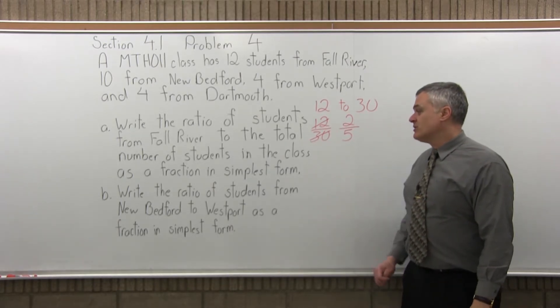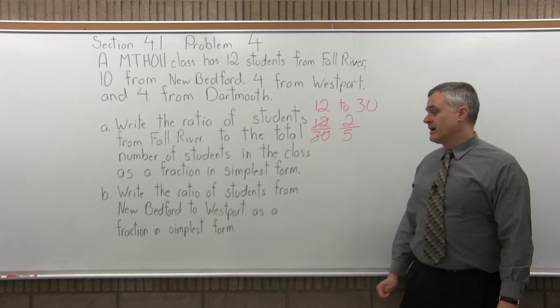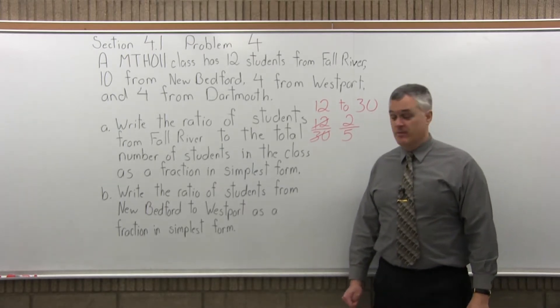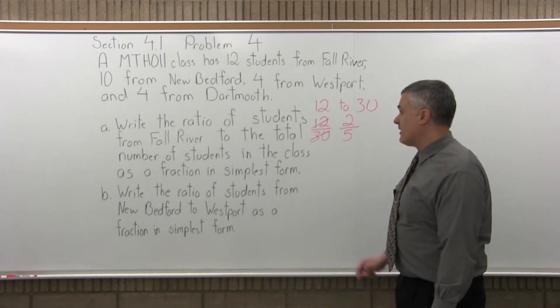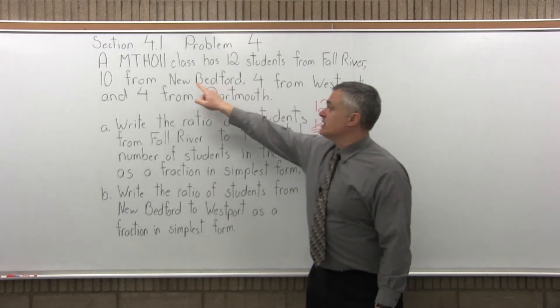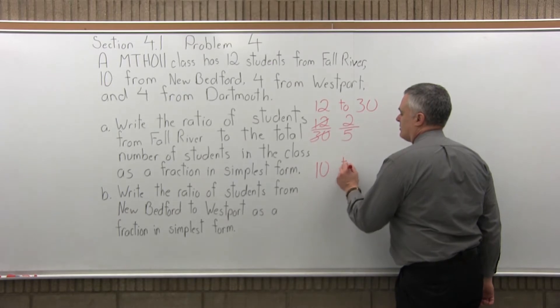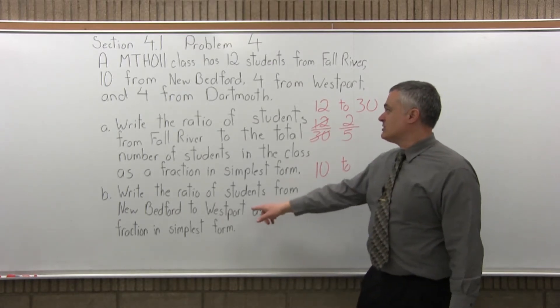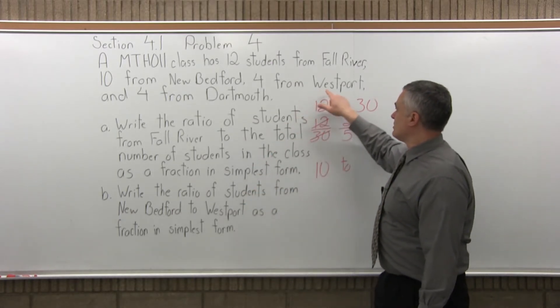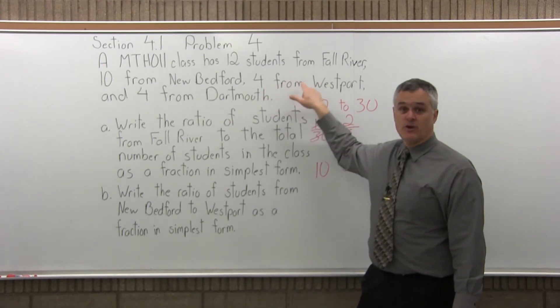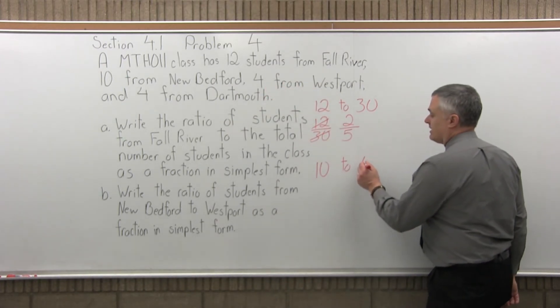Part B says write the ratio of students from New Bedford to Westport as a fraction in simplest form. So from New Bedford, if I go back to the explanation, there are 10 students from New Bedford. So that will be 10 to the number of students from Westport. Again, if I go back to the original problem, there are 4 students from Westport. So that would be 10 to 4.